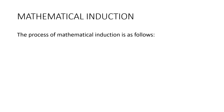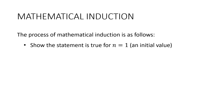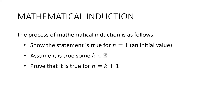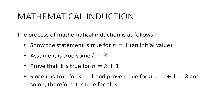Let's begin by reviewing the process of mathematical induction. We start by showing the statement is true for some initial value — often n equals one but not always. Then we assume that it's true for some k that's a positive integer, and then we prove that it's true for n equals k plus one. We conclude that since it is true for n equals one and proven true for n equals two and so on, therefore it is true for all n.